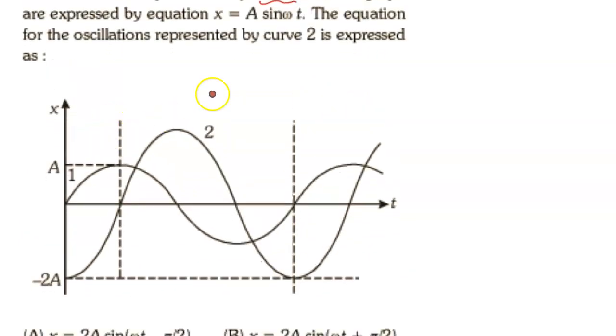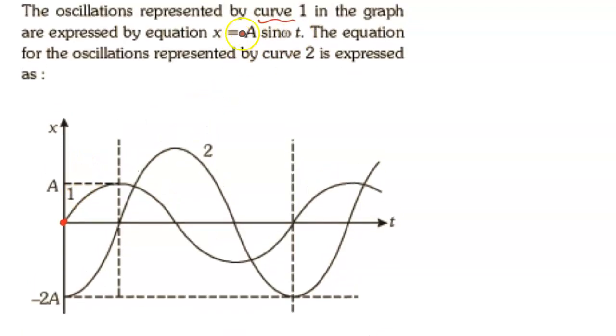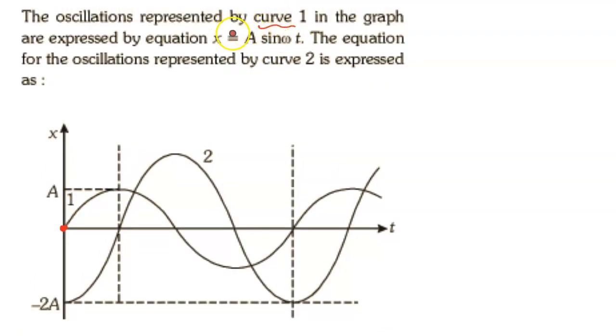At the initial moment, at t = 0, you can get the amplitude by this point only. If you put t = 0 in the first equation, or the equation of curve 1, you will get x = 0.